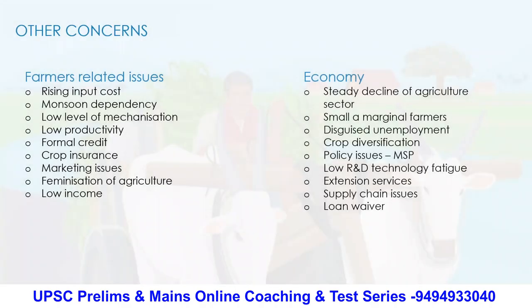Before getting into drone technology in agriculture, we need to understand all the concerns in agriculture. Farmer-related concerns include rising input costs, monsoon dependency — you don't know when rain comes and Indian agriculture is primarily rain-fed — low mechanization, low productivity, lack of formal credit and crop insurance, marketing issues, feminization of agriculture due to migration, and low income.